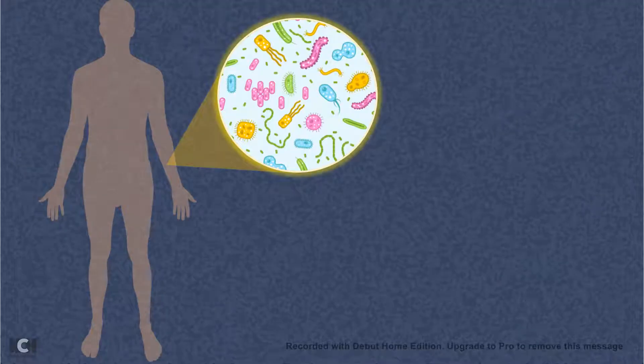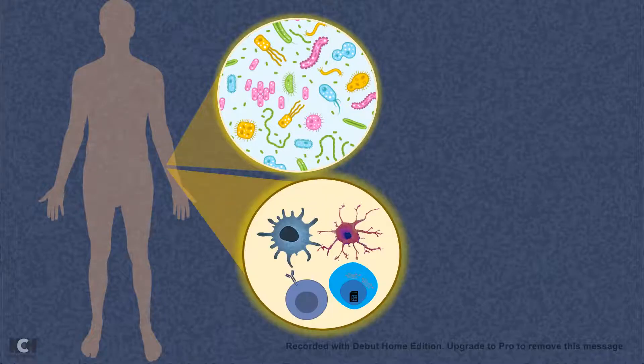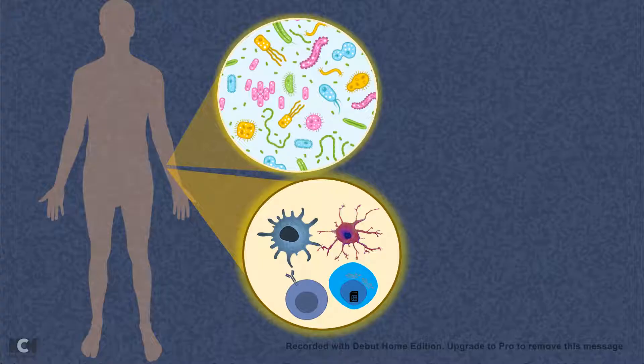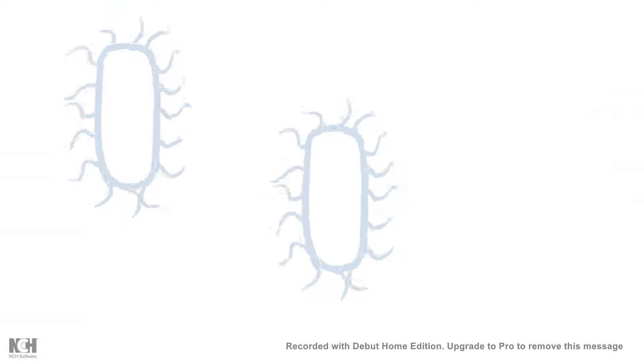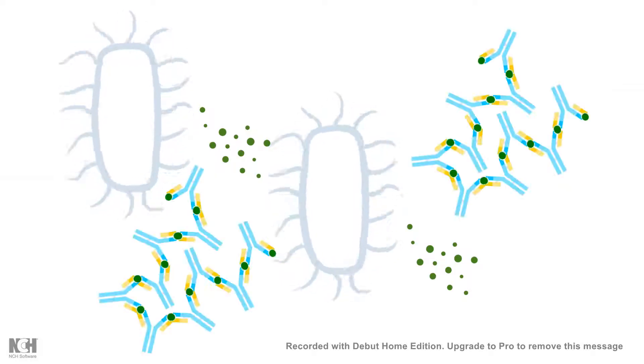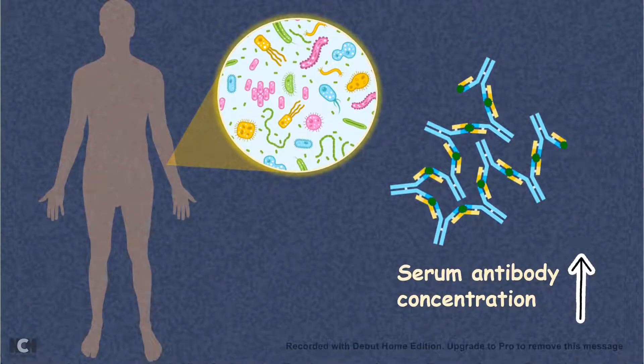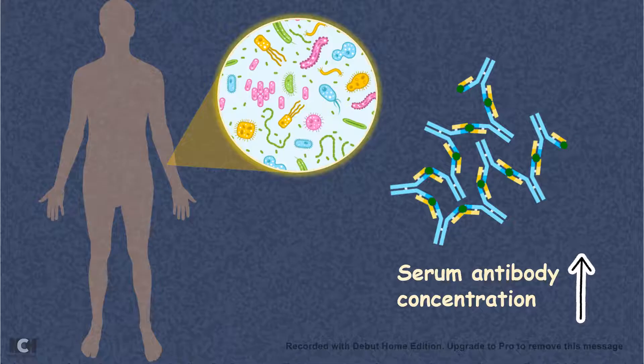When our body is infected by a pathogen, our immune system kicks in to protect our body from that pathogenic attack. Just after the pathogen has invaded the body, it secretes antigens or immunogens against which our body secretes antibodies. After a pathogenic invasion, the serum antibody concentration increases, and it's a nice biomarker to understand that there is a pathogenic invasion.